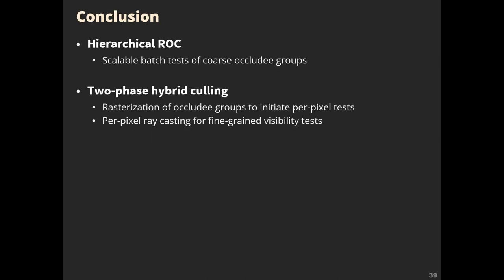In conclusion, unlike ROC, we do not immediately test the visibility of individual occludee bounds. Instead, our algorithm first finds the coarse groups of potential occludees in the hierarchy for scalable batch tests. Our solution is a two-phase hybrid culling approach: in the first phase, we rasterize occluded groups to initiate per-pixel tests; in the second phase, we cast per-pixel rays for fine-grained visibility tests. This two-phase approach better utilizes fragment processors and avoids costly hierarchy iteration on the host. Thank you for your attention.